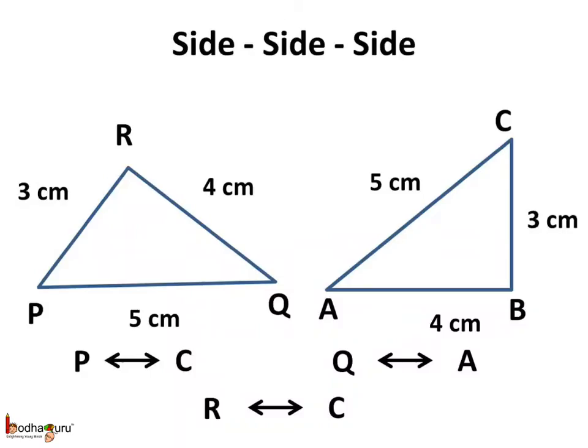We know two criteria for congruency of triangles. The first is the SSS rule, that is side-side-side. When the three sides of a triangle are equal to the corresponding three sides of another triangle, then the two triangles are congruent.